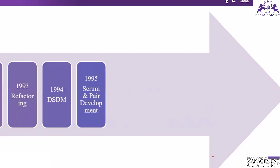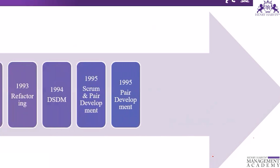In 1995, Scrum and pair development were introduced by Jeff Sutherland and Ken Schwaber. Jeff Sutherland later formed the Scrum Alliance and Ken Schwaber introduced Scrum.org — two different organizations. Also in 1995, James Coplin was involved in pair development, where two people sit together: one writes code and the other analyzes every line, constantly reviewing what the other person is thinking.